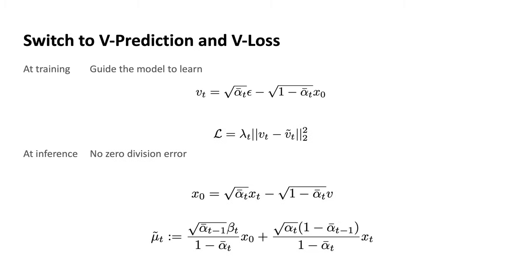So instead, we switch to v prediction and v loss. At training, it will guide the model to successfully learn something meaningful, and at inference, there will be no zero division errors.